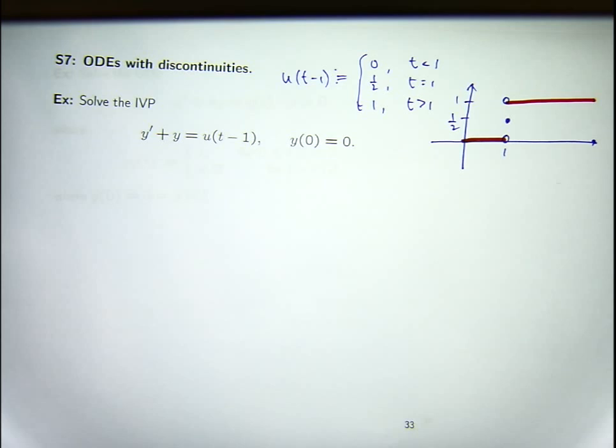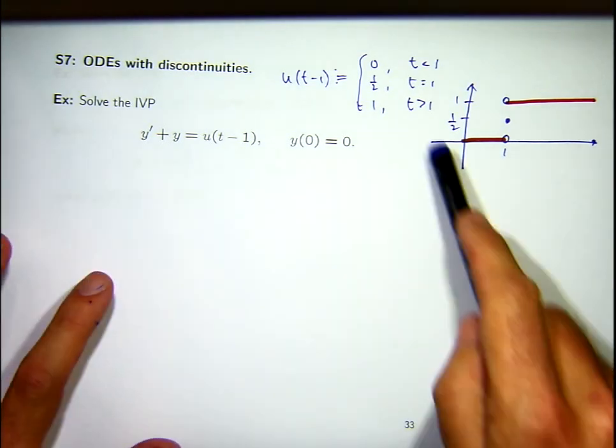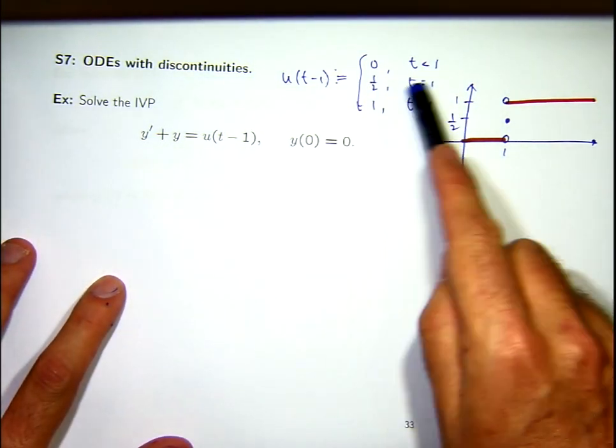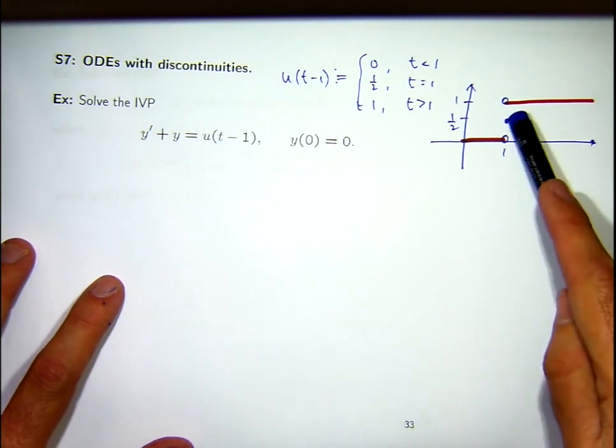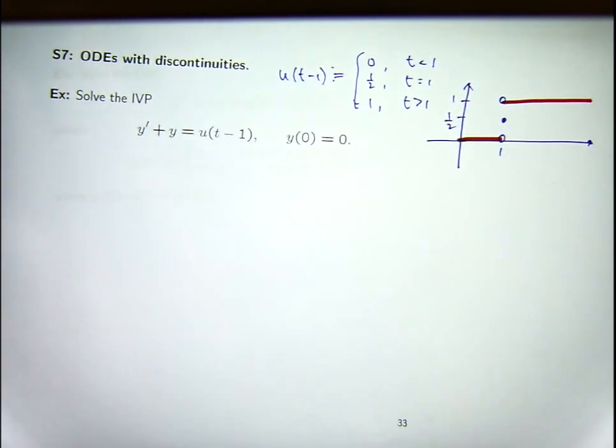Some books, some people, don't even define the value at the jump point, or they define it down here or up here. It doesn't matter. It doesn't change anything where Laplace transforms are involved. So, working with this definition, let's go through and illustrate the Laplace technique, and then you can use the idea to solve more difficult problems.